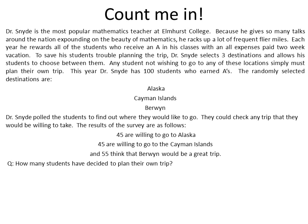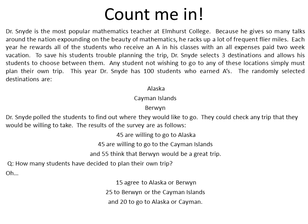You may pause if you want, but you should notice something strange about the numbers, because there are 100 students. Clearly, they could vote for more than one. So, I forgot to mention that 15 agree to go to Alaska or Berwyn, 25 to Berwyn or the Cayman Islands, and 20 to go to Alaska or Cayman. Now, how many plan their own trip? Ten are willing to go to any of the three destinations.